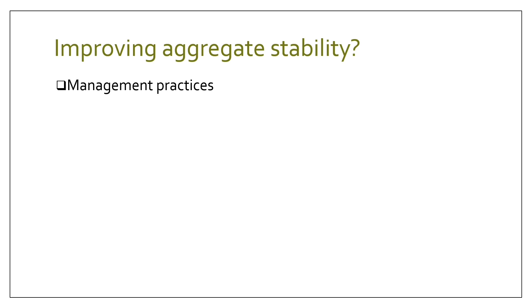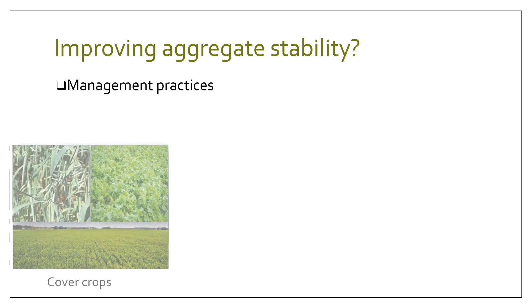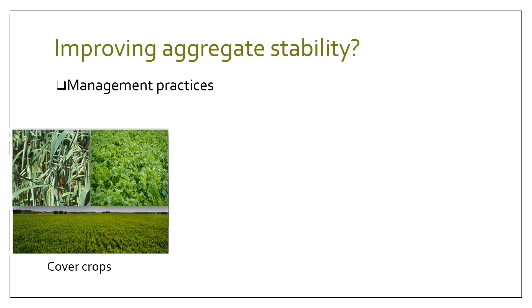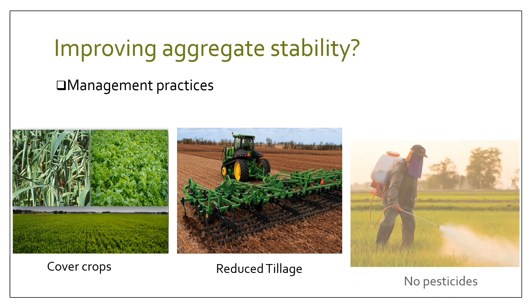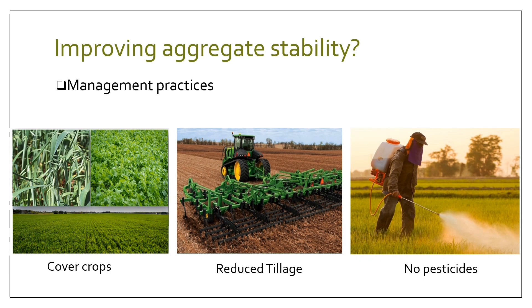So how can we improve the aggregate stability of our soil? Well, there are various management practices which can be applied for improving the aggregate stability of our soil, such as including cover crops into your crop rotation, avoiding tillage practices or practicing reduced tillage, or avoiding pesticides which are harmful to beneficial soil microorganisms. All these practices help to improve soil aggregate stability, and there might be other practices as well.